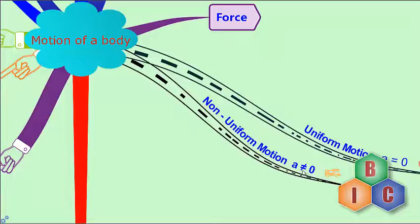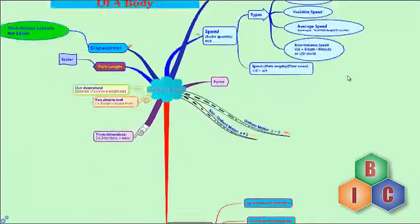If you want to take a turn, the direction of motion is also changing — you have to slow down, and again acceleration comes into picture. Remember: during uniform motion, acceleration is zero; during non-uniform motion, acceleration is not zero. Non-uniform motion occurs when you reduce speed (change in velocity) or change direction — both bring acceleration into play.